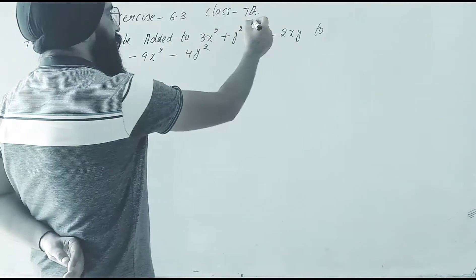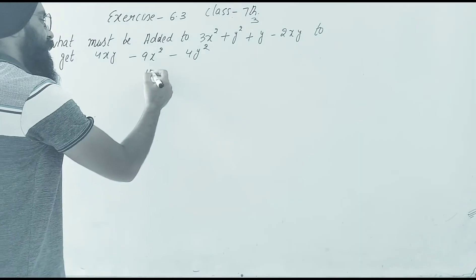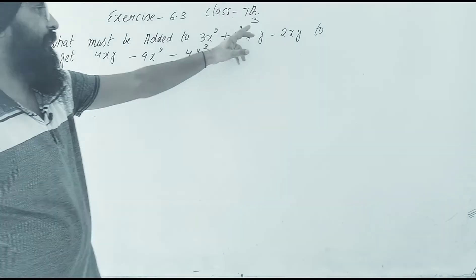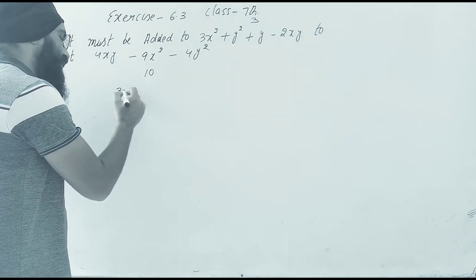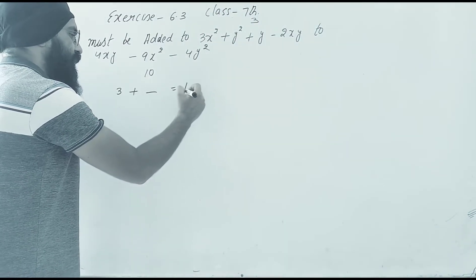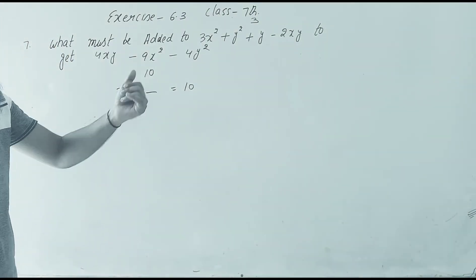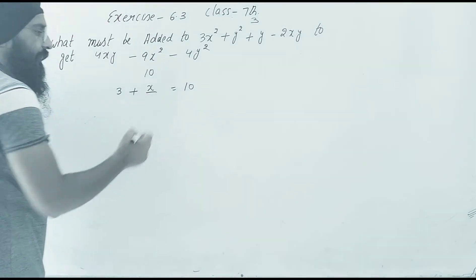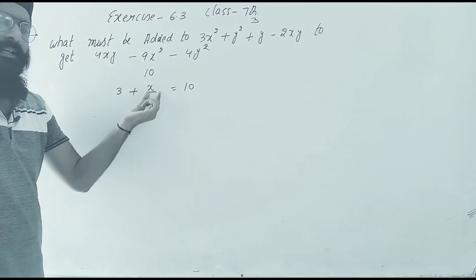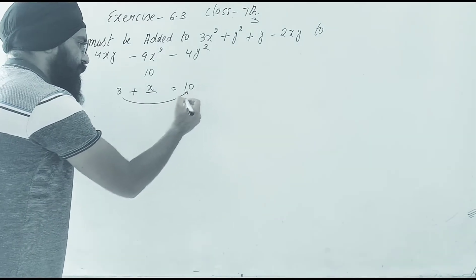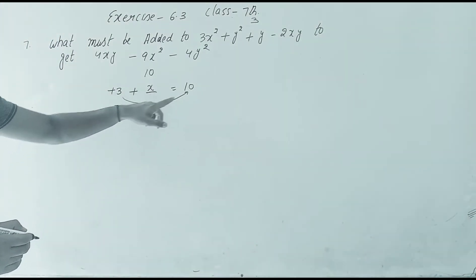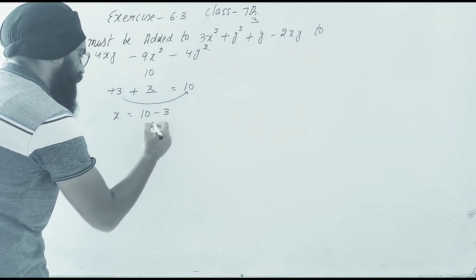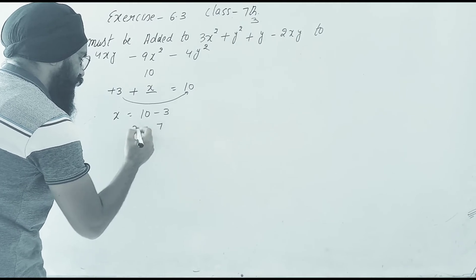I will take a simple question: what must be added to 3 to get 10? I will take a number x. The number x will be added to the right side. The term is positive, the right side is negative. So x = 10 - 3, and the answer is 7.